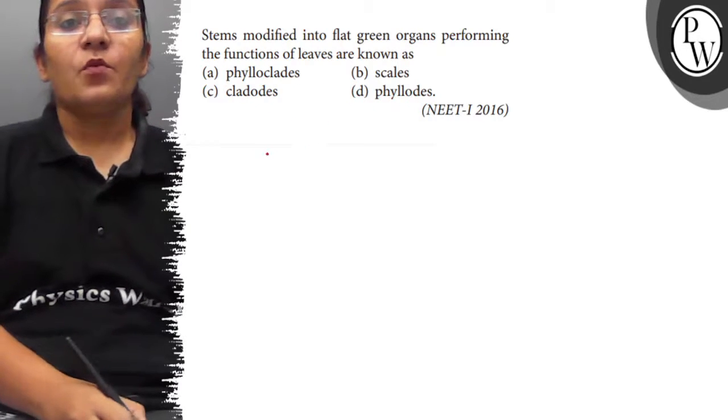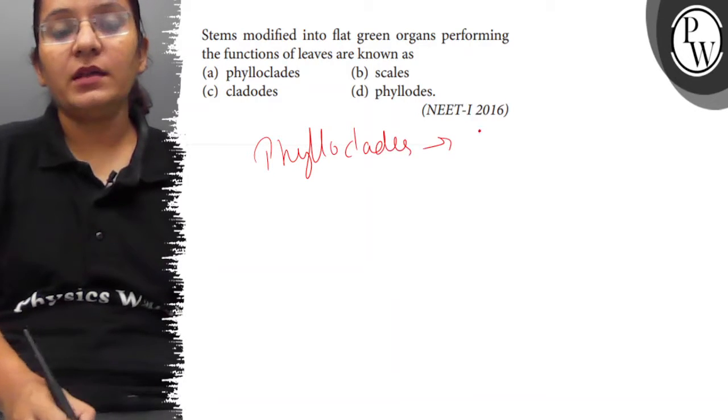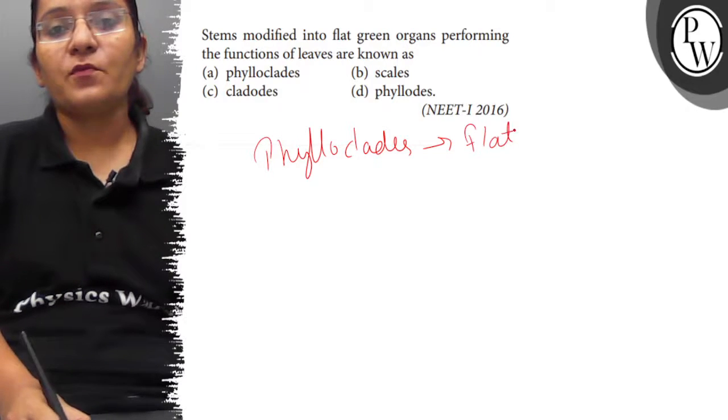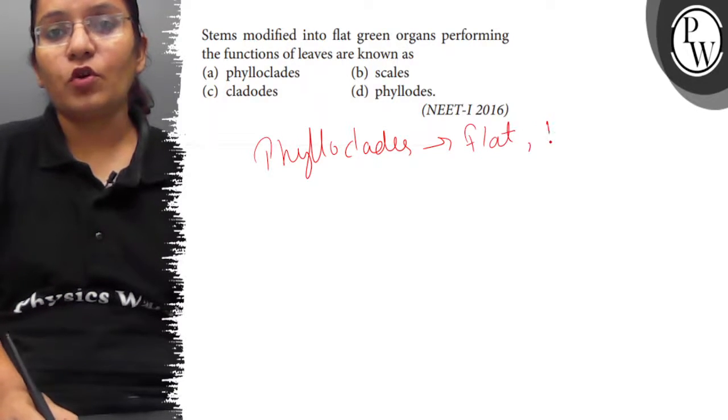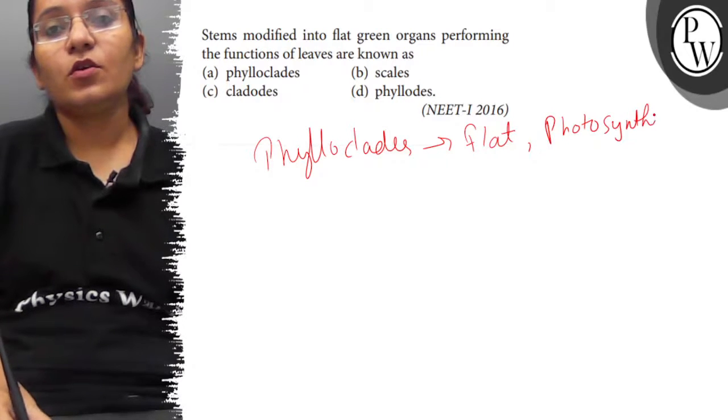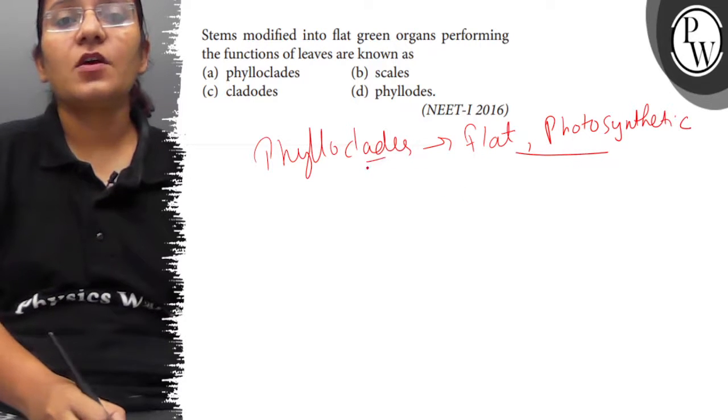Phylloclades - phylloclades are when stem is modified as flat photosynthetic structures. Photosynthetic means chlorophyll is present, it becomes green and flat - this is phylloclades.